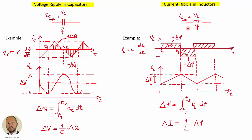In the case of inductors, we have a similar situation. Here we have an example in which we are applying a constant voltage across the inductor — positive during one interval and then negative during another interval. As we know, the average voltage across an inductor must be equal to zero. This is the similar situation to the average current through a capacitor being zero. The positive area corresponds to the increment in the flux linkage, and the negative area is the decrement. So, using the differential equation of the inductor, to calculate the current we do the integral of the voltage, and because the voltage is constant, we have a ramp for the current.